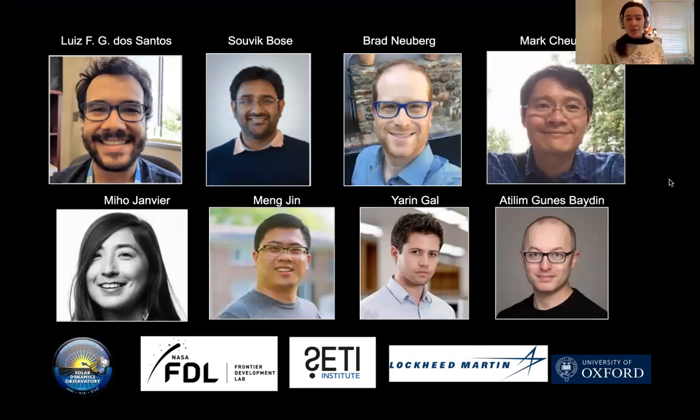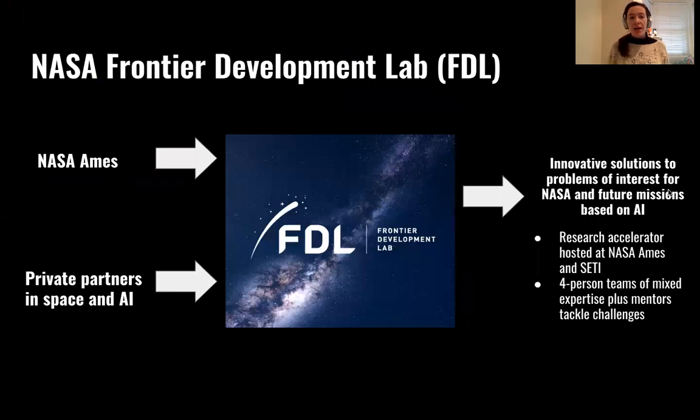As I said, this started as part of the Frontier Development Lab. That is a partnership between NASA Ames and some private partners in the space industry and in the AI industry. And what FDL does each year is to identify some problems of interest for NASA and particularly for future space missions that could be solved with AI, and to gather some teams of researchers with different expertise and to challenge them to propose some innovative solutions to these problems.